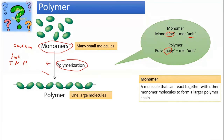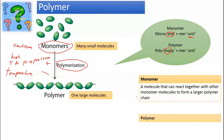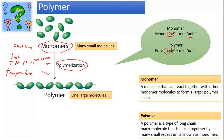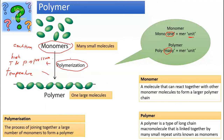A polymer is a long-chain macromolecule linked together by many small monomers. When monomers combine with other monomers, they become a polymer. Polymerization is the process of joining together a large number of monomers to form a polymer.